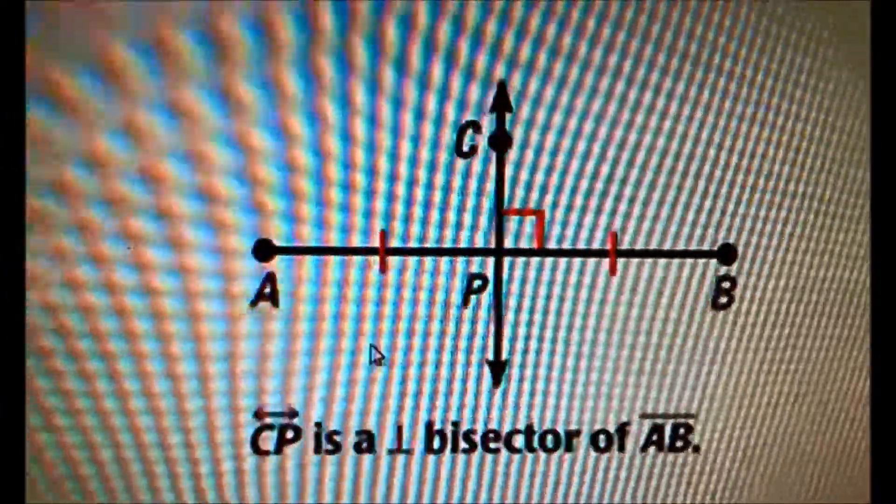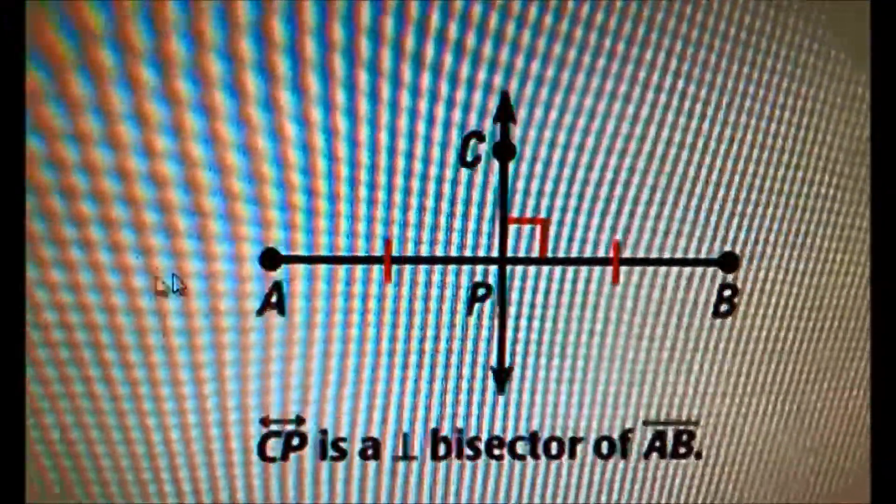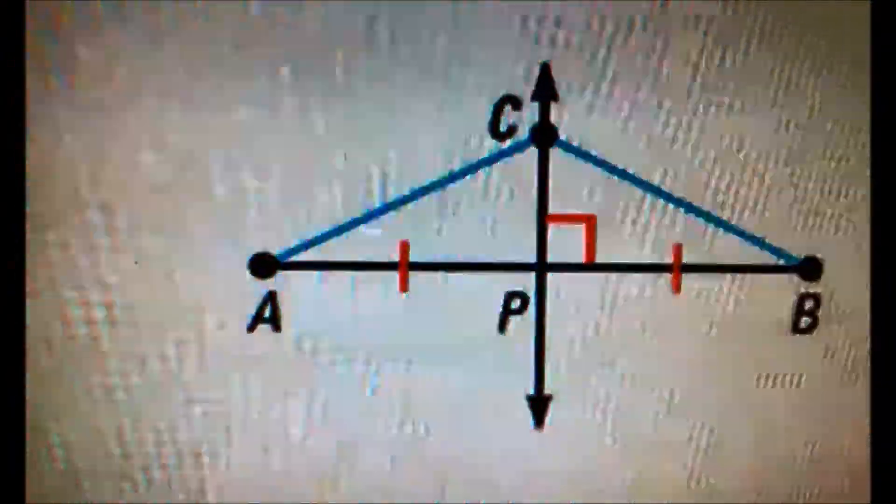Based on this example, CP is a perpendicular bisector of AB. Moving on.